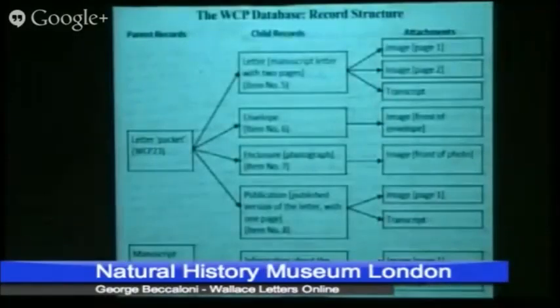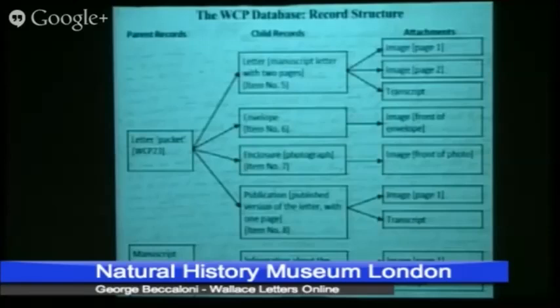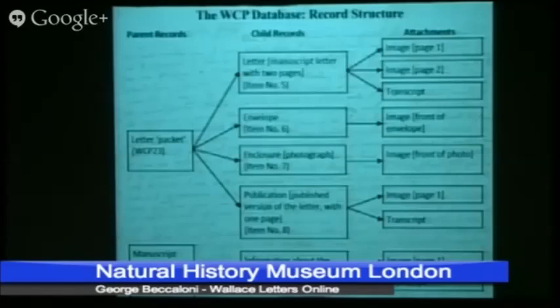This shows the user interface of the Access database I designed to catalogue the letters and manage the scan and transcript files. And this shows the data structure used. Each master letter represents either a manuscript document or letter. Letters are treated as packets of documents, because there might be a number of items in a packet — for instance, the manuscript of the letter, the envelope it was posted in, and any number of enclosures. Each of these items has a separate child record linked to the master record, so that everything is kept together.